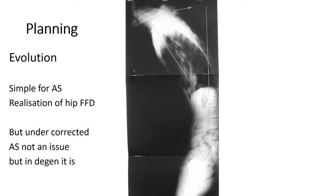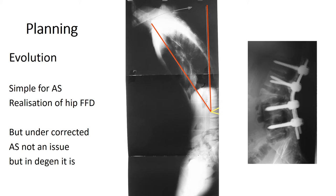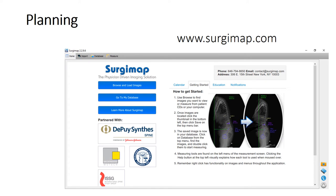The planning has been an evolution. It was simple for ankylosing spondylitis, where a line was taken from C7 to the center of rotation of the osteotomy, the angle measured, drawn as a wedge, and executed. Most people would now use some form of software pre-operative planning, such as SurgyMap, which can be downloaded free from the address on the screen.